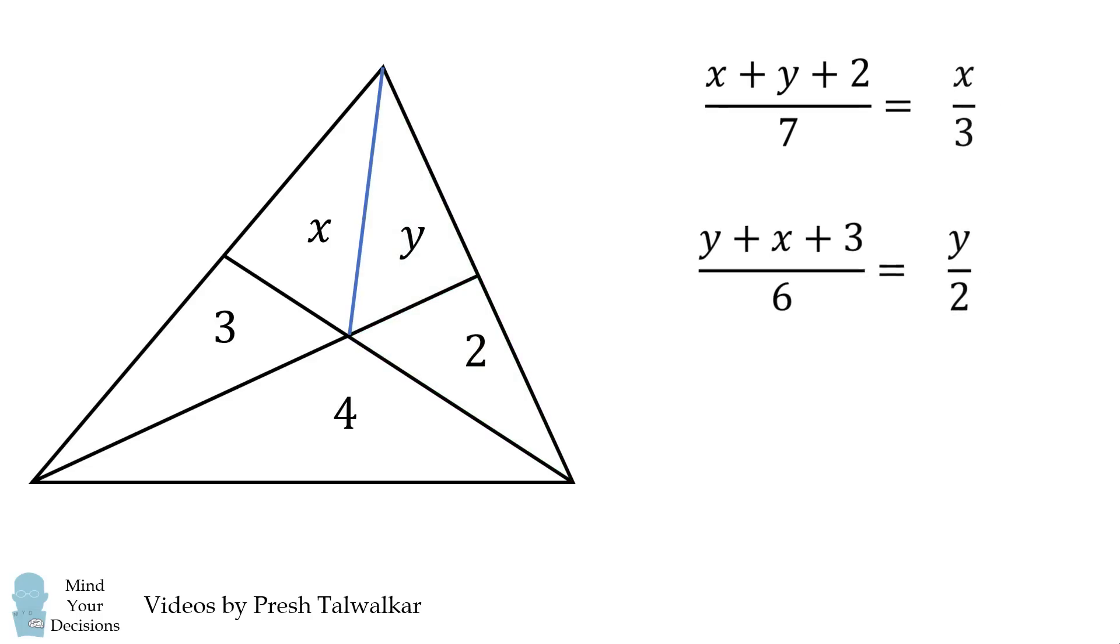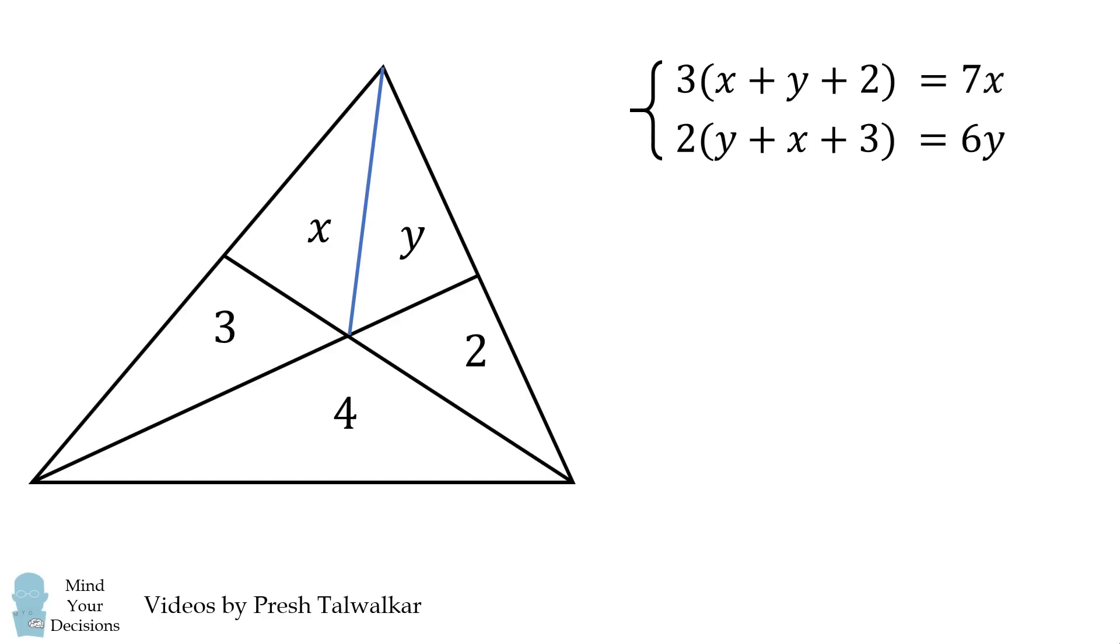So we can now get rid of all these values of b1, b2, b3, and b4, because all we really care about is the values of x and y. So we'll first cross multiply these fractions. We'll cross multiply the fractions on the top, then we'll cross multiply the fractions on the bottom. We now have a system of two equations in two variables x and y, and we'll be able to solve for unique values of x and y.